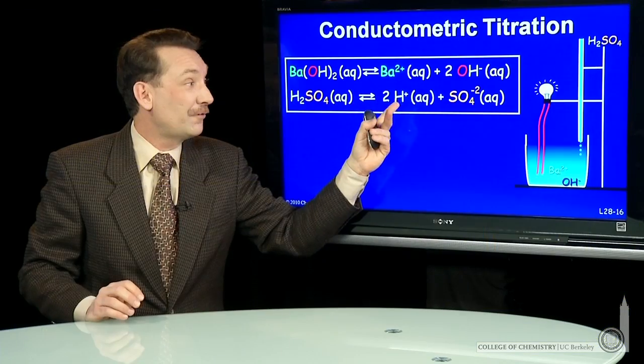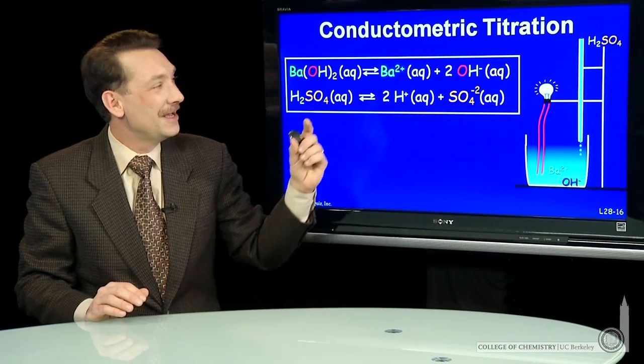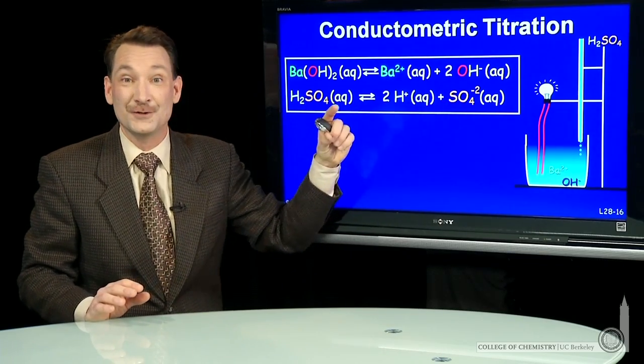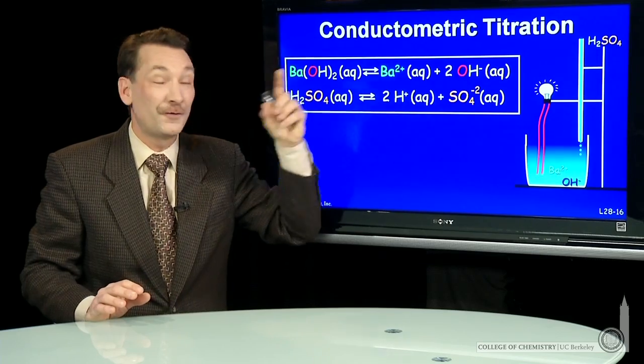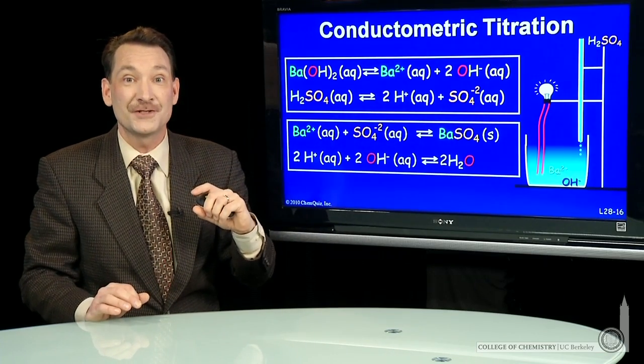H2SO4 will form a high concentration of sulfate in solution. So barium ions and sulfate from different sources, if we mix these two solutions, barium ions will find the sulfate ions and form solid barium sulfate.